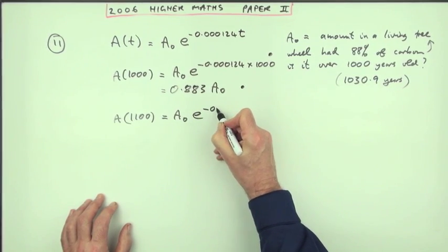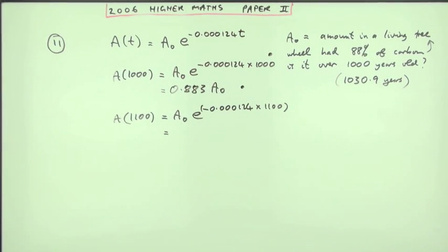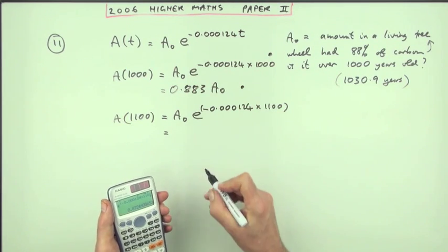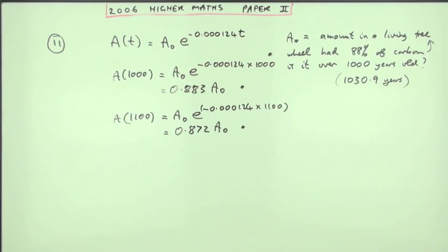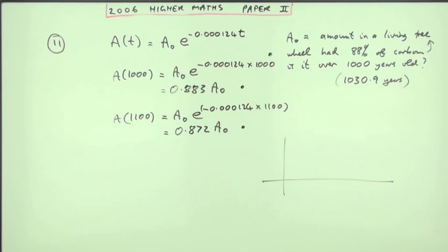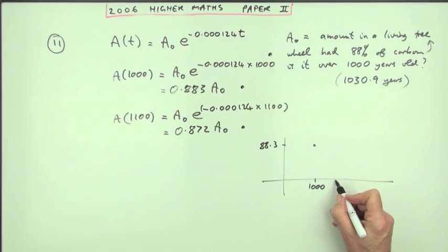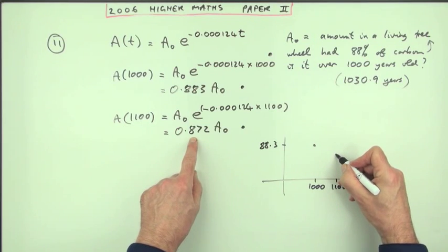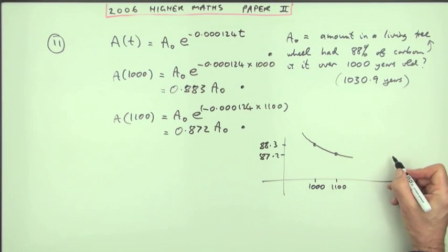Well what would that be? That would be e to the negative 0.000124 times 1100. Put in your calculator and you get 0.872, 0.872 of A0. That would get you a mark. Now you'd have to use this information to quickly sketch what this graph looks like to know whether 88% was more or less than a thousand. So I'd have to put a quick sketch of this graph. When it was 1000 the percentage was 88.3. When it was 1100 the percentage was less than that, 87.2, which means the graph goes like this. That would get you a mark.